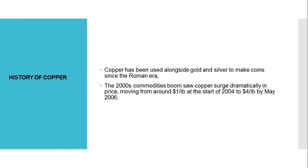As a result, the copper price has become increasingly linked to its industrial applications in the sectors mentioned above. The 2000s commodities boom saw copper surge dramatically in price, moving from around $1 USD per lb at the start of 2004 to $4 USD per lb by May of 2006.